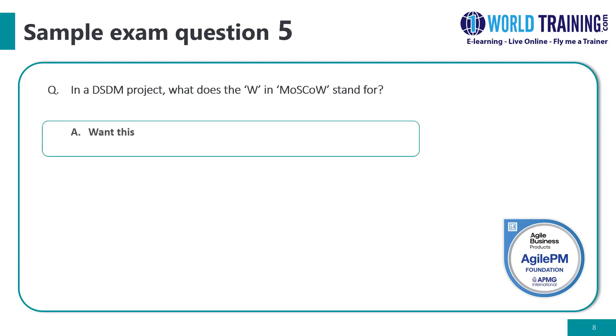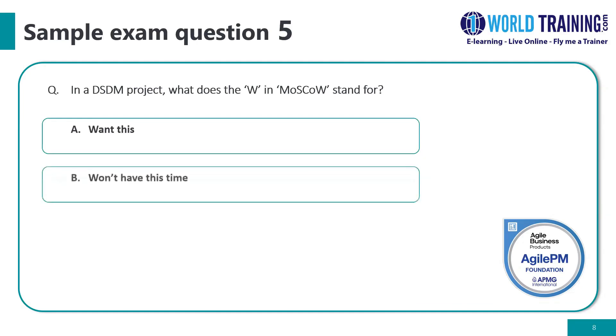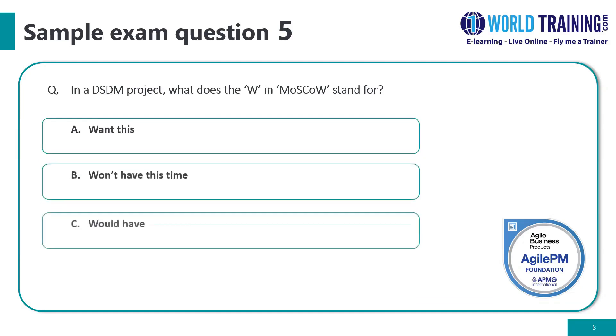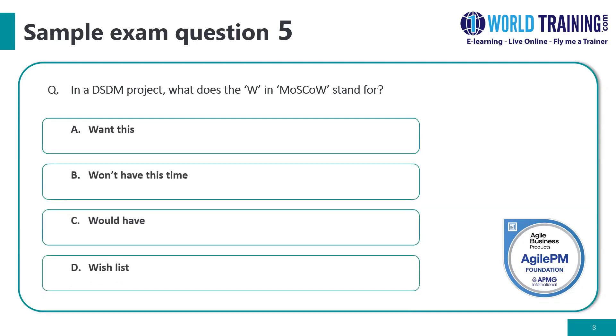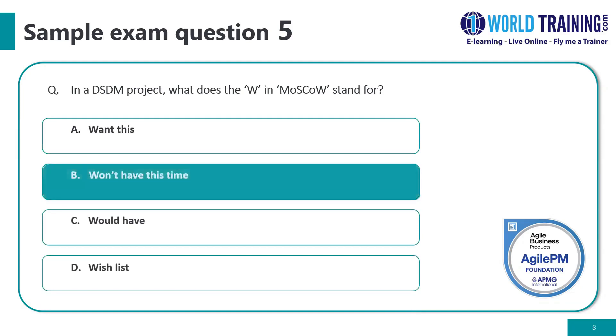Question number five: in a DSDM project, what does the W in MoSCoW stand for? The answer is: won't have this time.